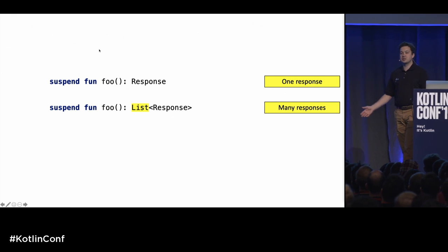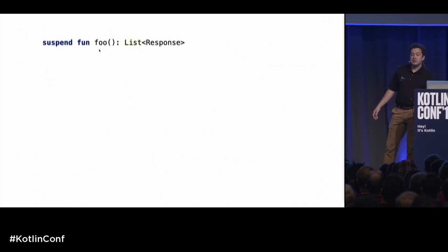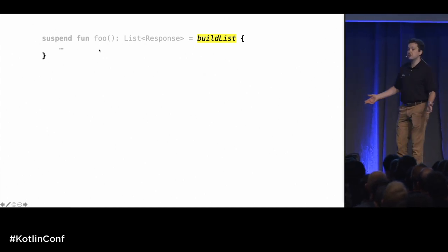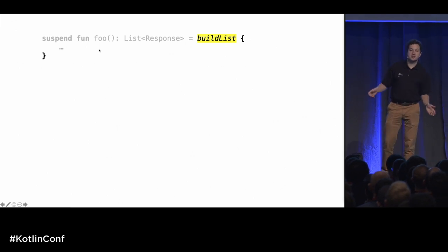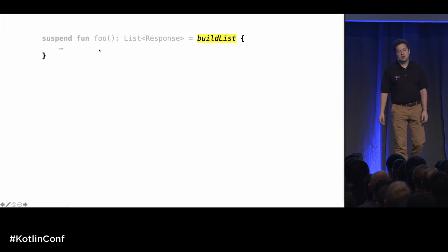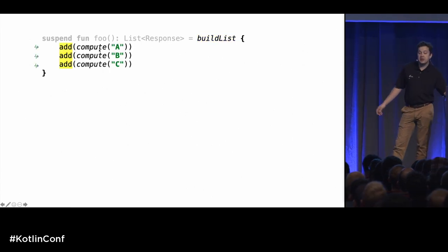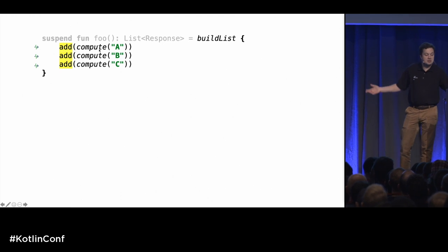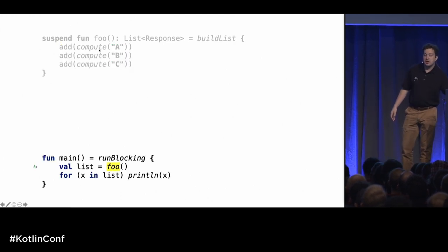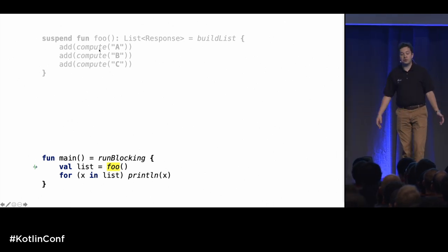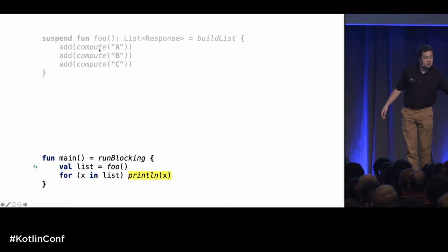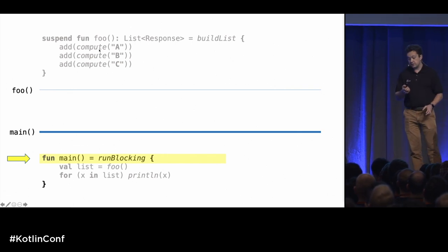We can return a list of responses from a suspending function. That's a way to work with many responses — collections of stuff. Let's take a close look at how this works. One implementation of a list-returning function can use a hypothetical function like buildList — we don't have this in the Kotlin standard library yet, but we'll hopefully bring it soon. Hypothetically, it could compute three things and return a list of results. From the main function, you call foo, get a list, iterate over it, and print or process the results.